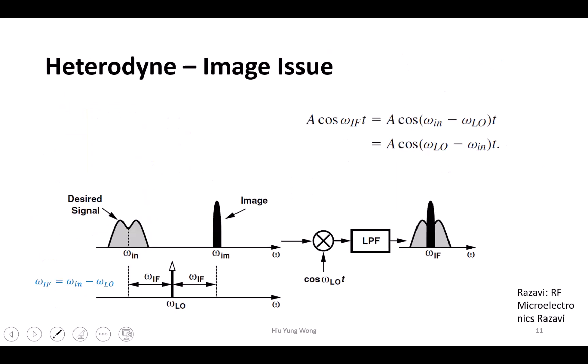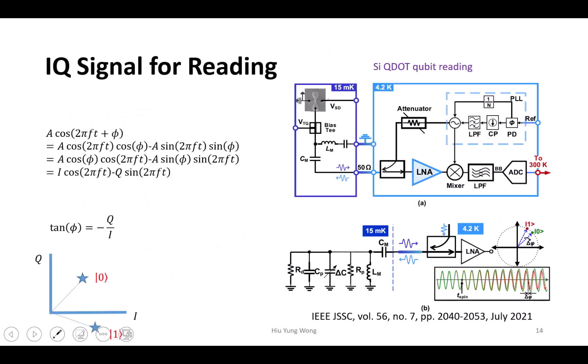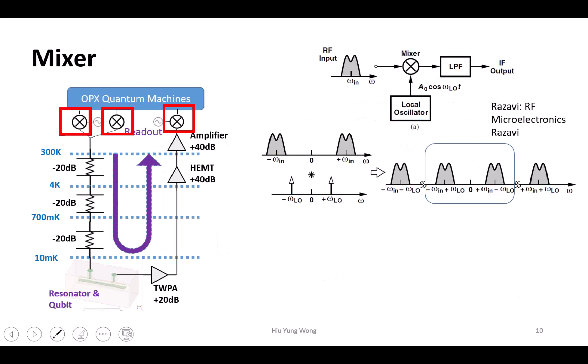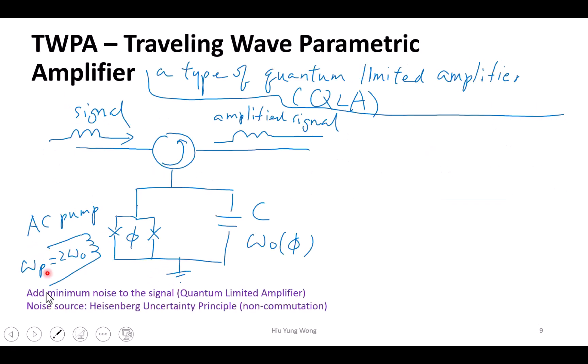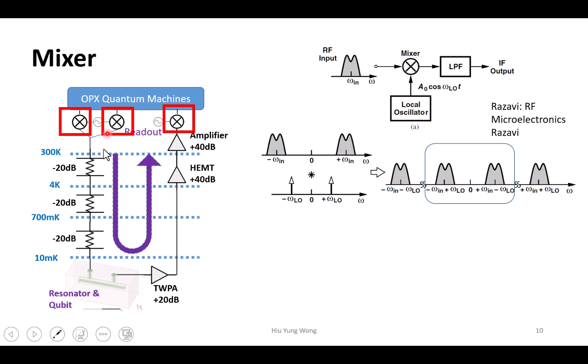So this is TWPA and then I want to talk about the mixer. Let's go back to this circuit. Even TWPA itself has an oscillator because I need this AC pump. But now we want to take a look at the mixer that helps us to get to the correct frequency. So what is a mixer?